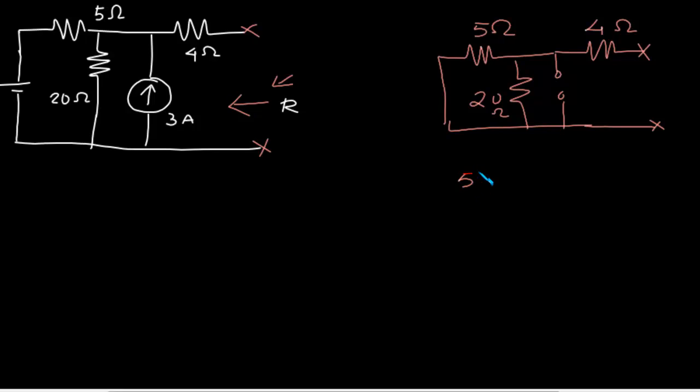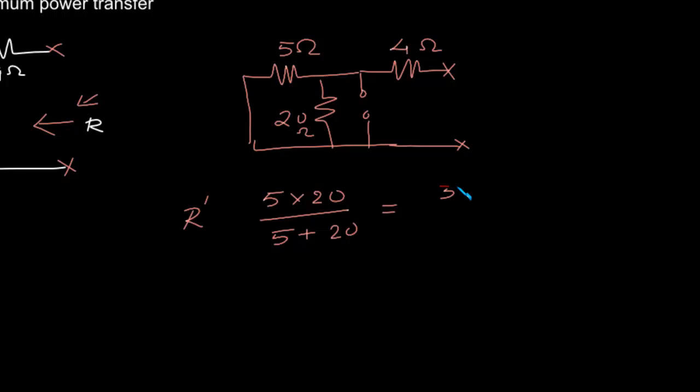We have equivalent resistance R dash equals 5 into 20 by 5 plus 20, which gives 5 into 20 by 5 into 5. That is 4 Ohm.